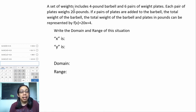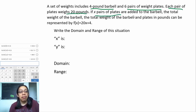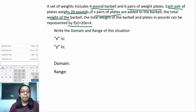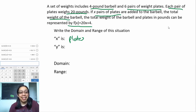Reading again: the set includes a four-pound barbell and six pairs of weights, each weighing 20 pounds—that's pretty heavy. x is the number of pairs of plates, and the total weight is represented by the function 20x + 4. Step two: let's identify what x and y are. They tell you x is the number of plates—those giant metal discs you put on the end of a barbell.